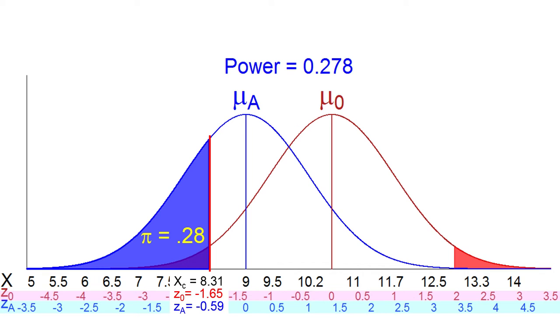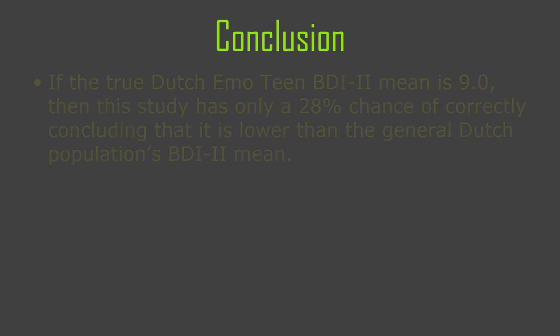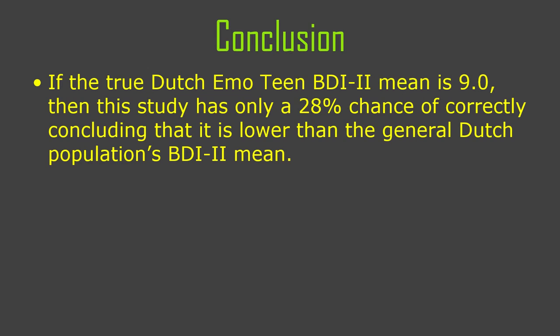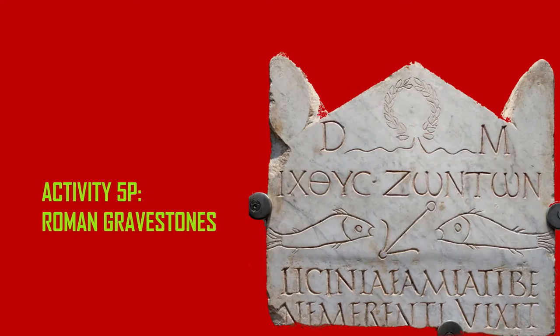In conclusion, if the true BDI mean for Dutch teens is 9.0, this study has only a 28% chance of correctly concluding that the Dutch emo teen mean is lower than the general population's BDI-2 mean. It only has a 28% chance of avoiding a Type 2 error. This is really low power — we'd like power around 0.8 or 0.9 or above. So this is pathetic.